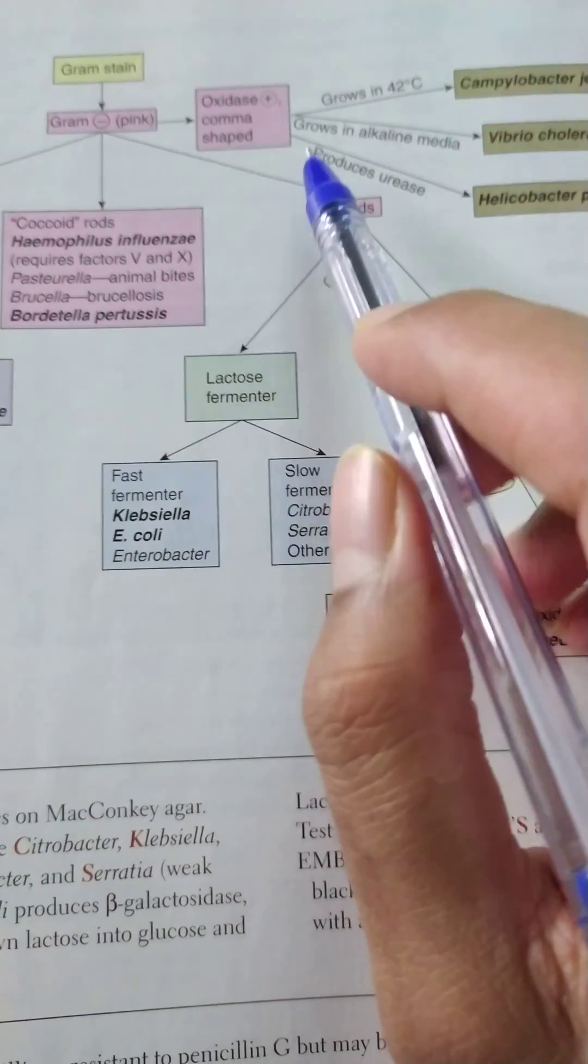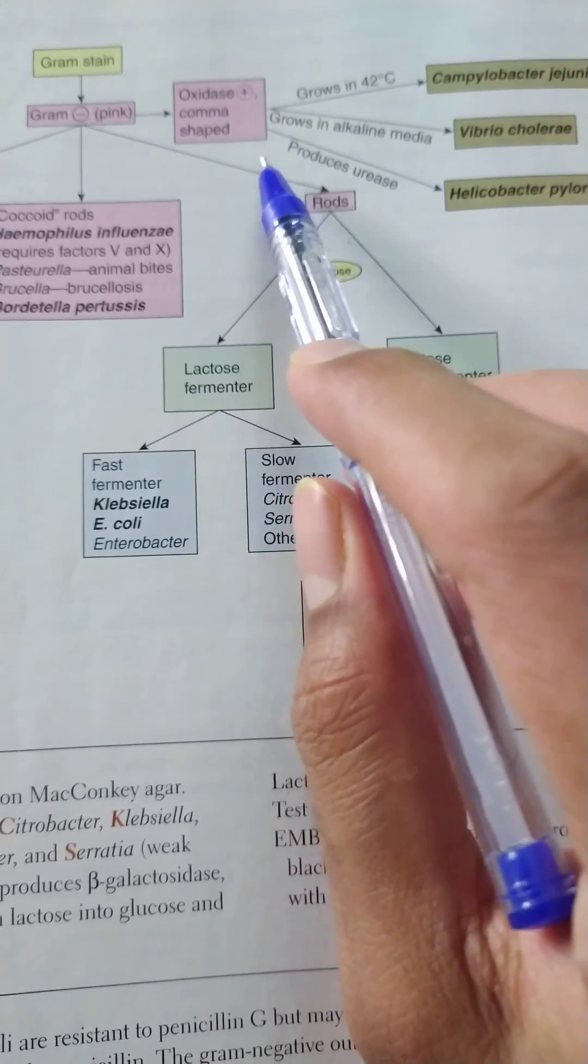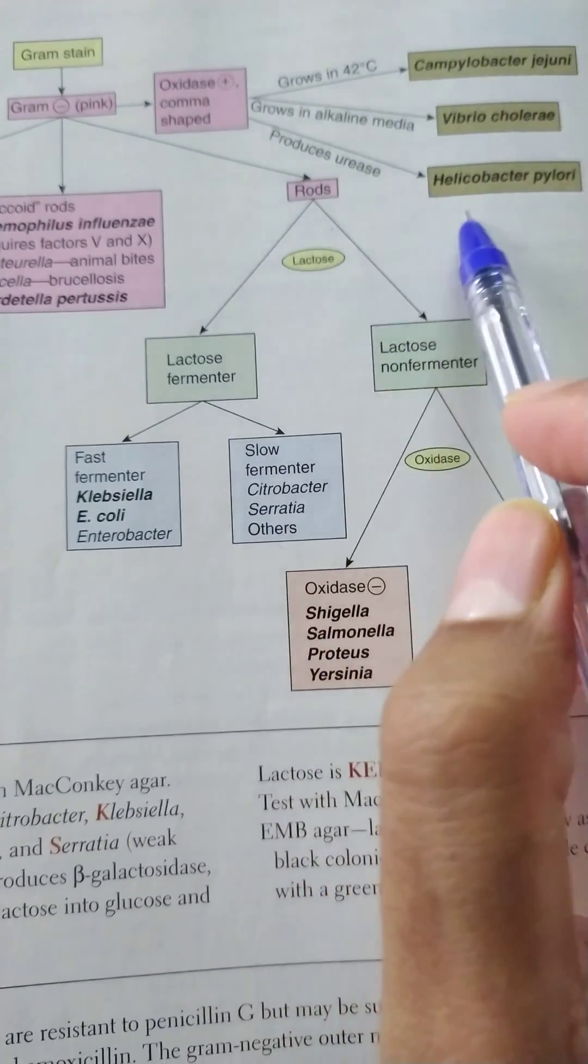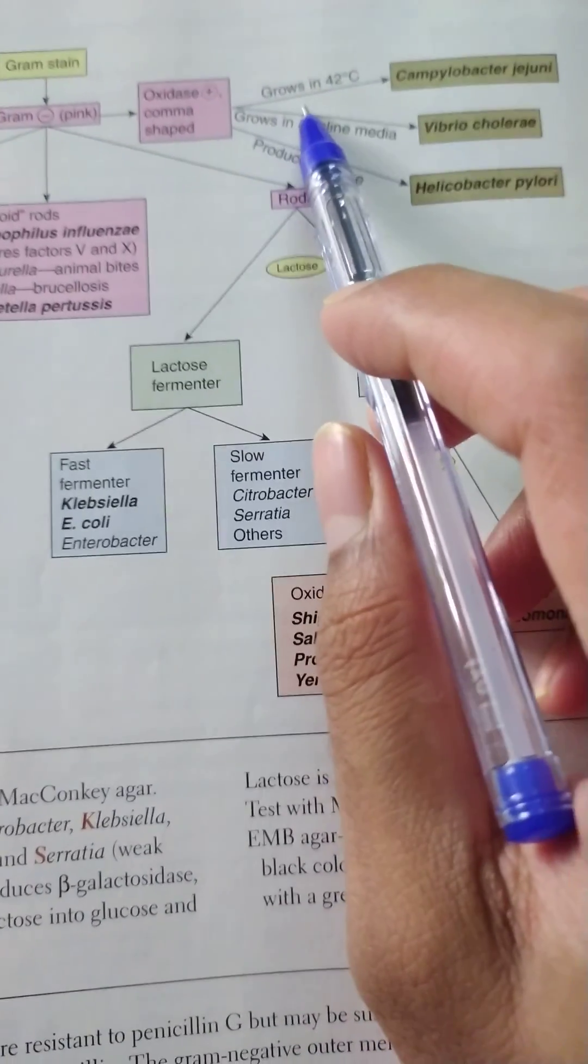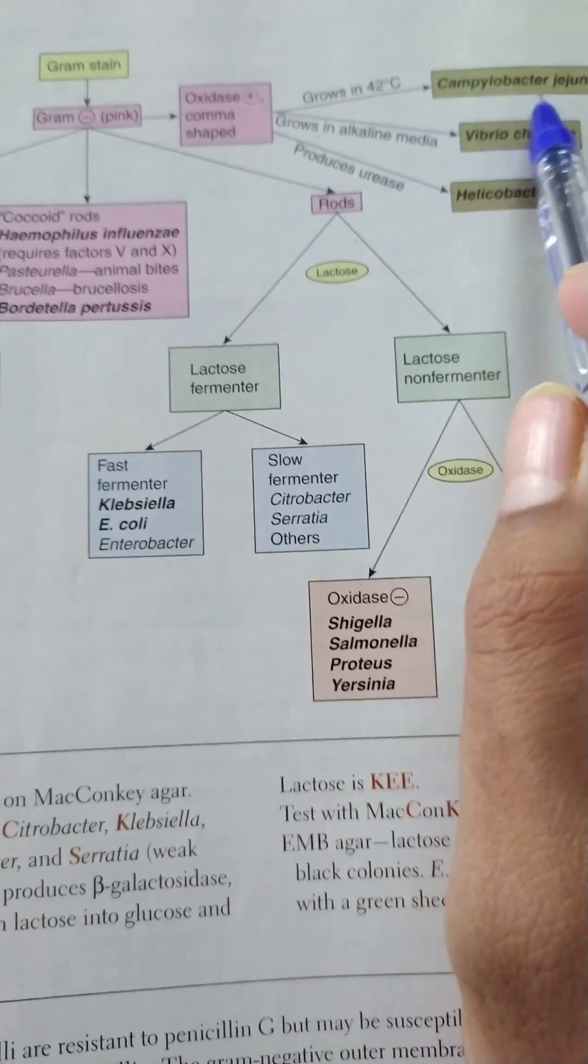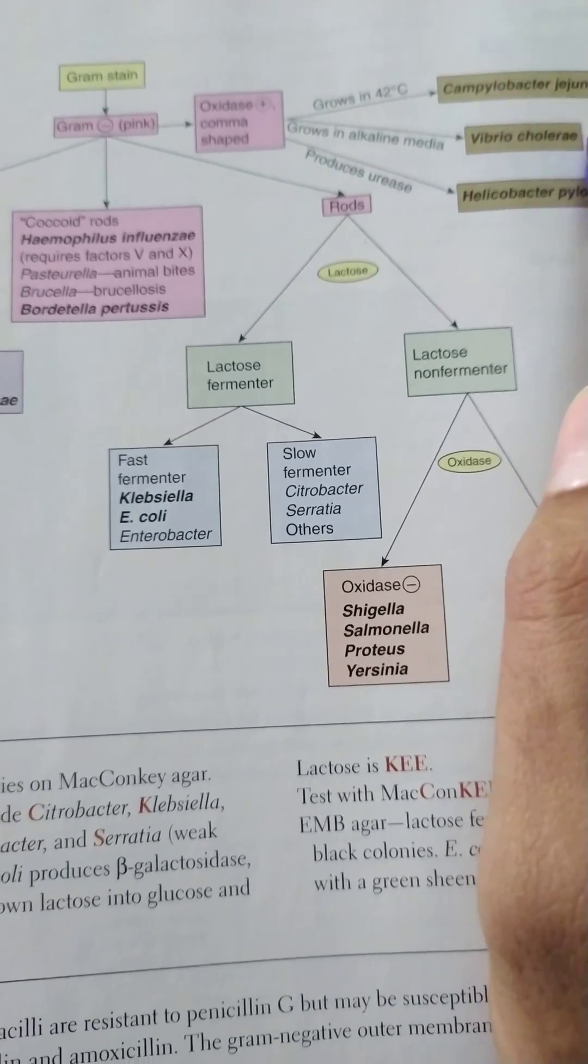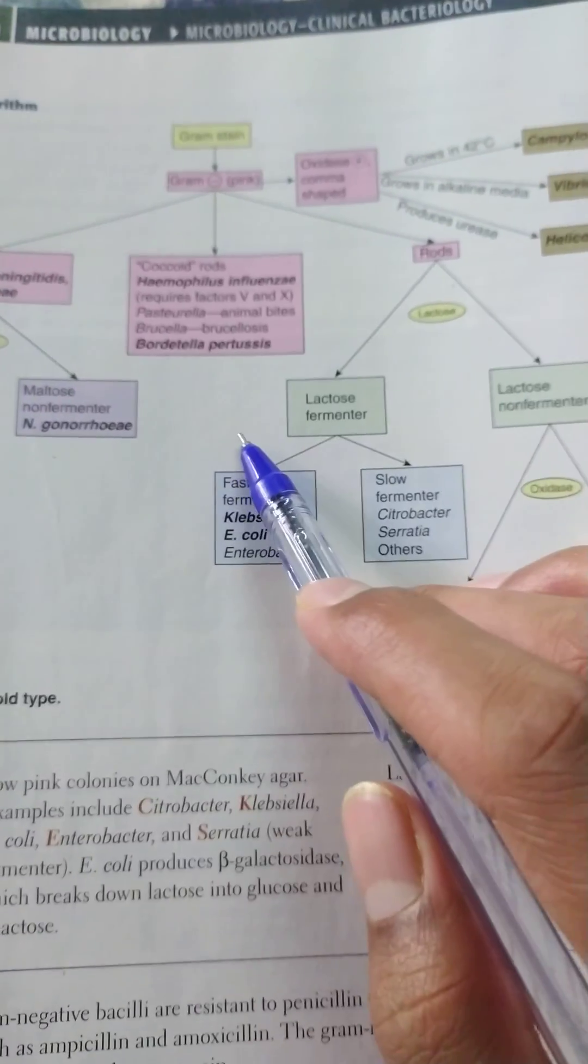Now coming to the comma-shaped organism. The one which produces urease is Helicobacter pylori, which grows in alkaline media is Vibrio cholerae, and which grows in 42 degrees Celsius is Campylobacter jejuni. Hope you have understood. Thank you.